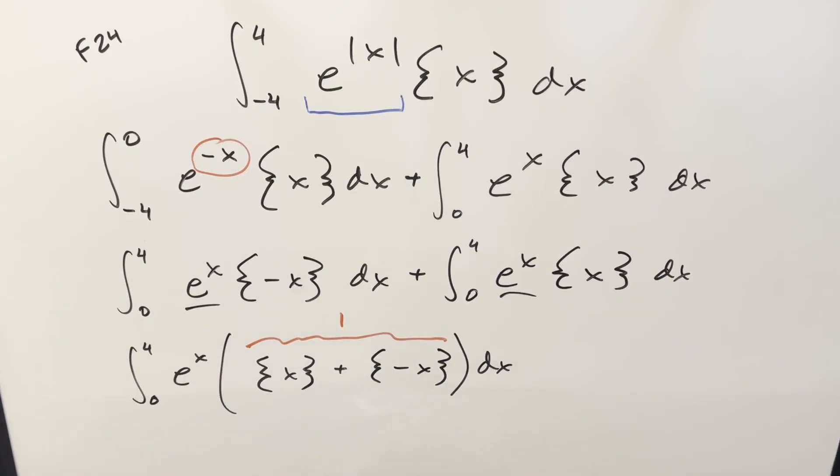Now this is a very simple integral. We're just integrating e to the x. So we get e to the x evaluated from 0 to 4. For my final solution, we just get e to the 4th minus 1. And that's it.